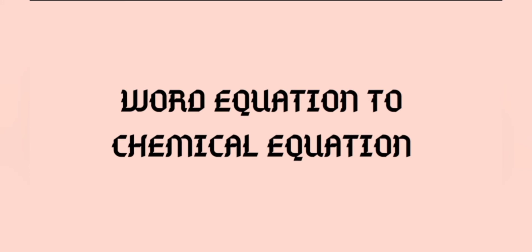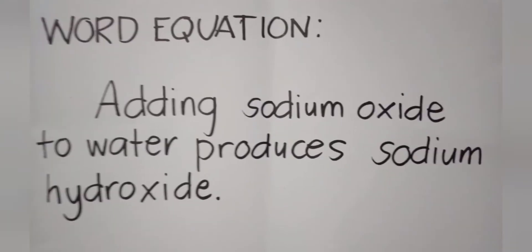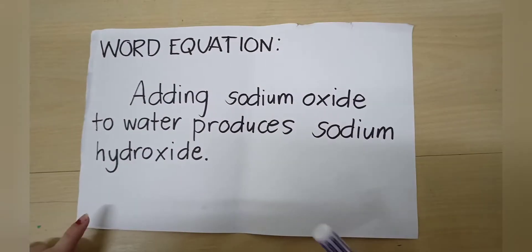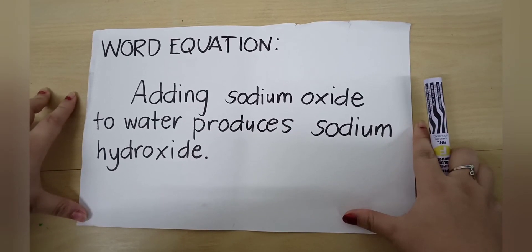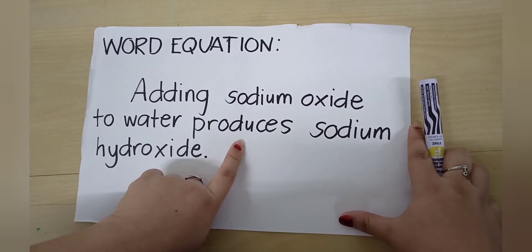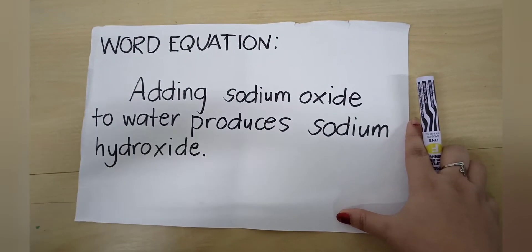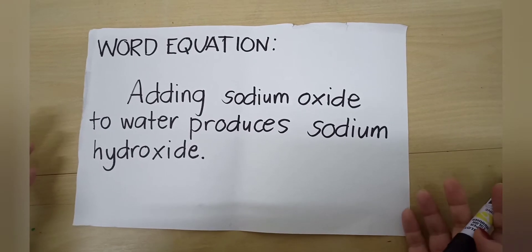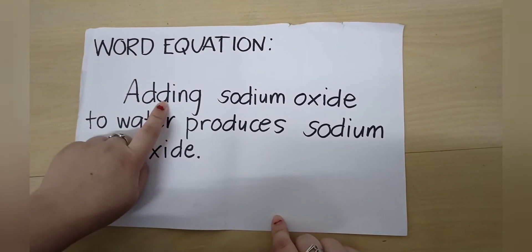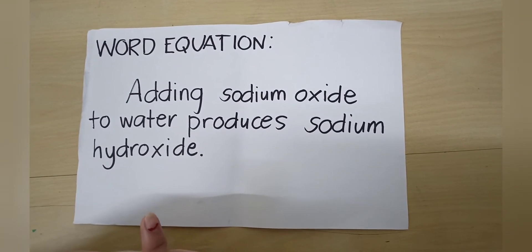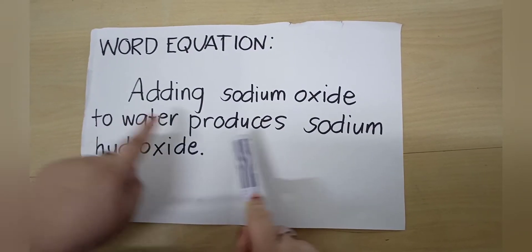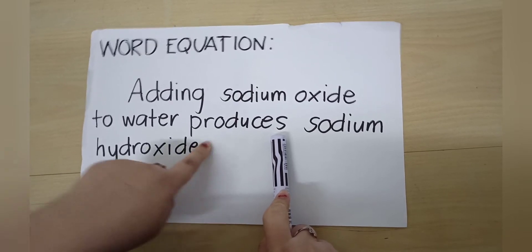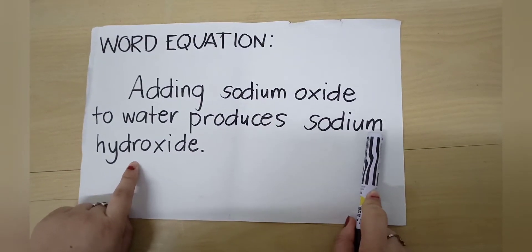Now let's try to transform a word equation to a chemical equation. First example: adding sodium oxide to water produces sodium hydroxide. The first step is to analyze the given word equation. Based on this word equation, we have the keywords 'adding' and 'produces.' From these two terms, we are able to know which are the reactants and which is the product. Adding means plus sign, so we are going to add sodium oxide and water. 'Produces' means there will be a product, which is sodium hydroxide.